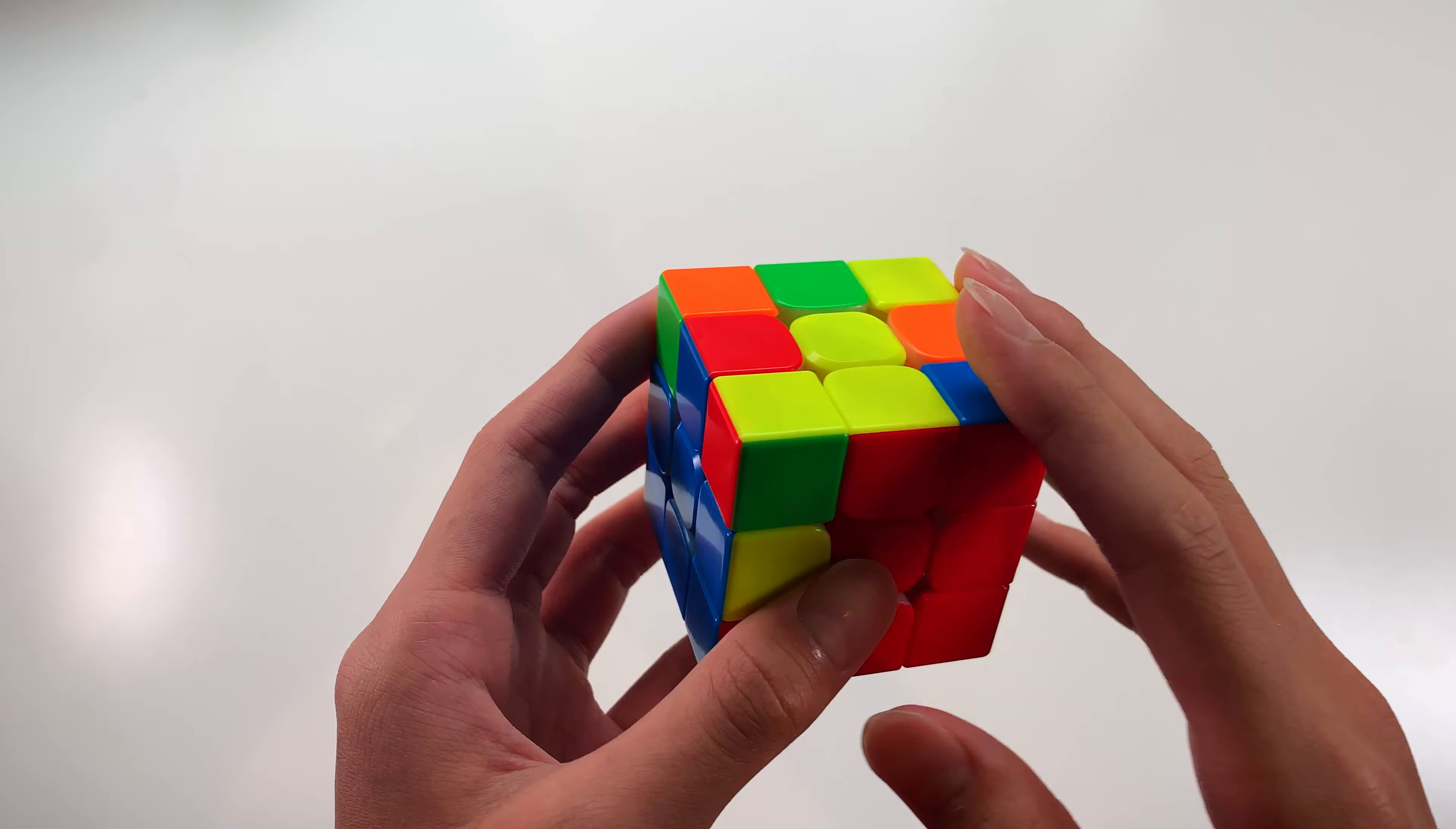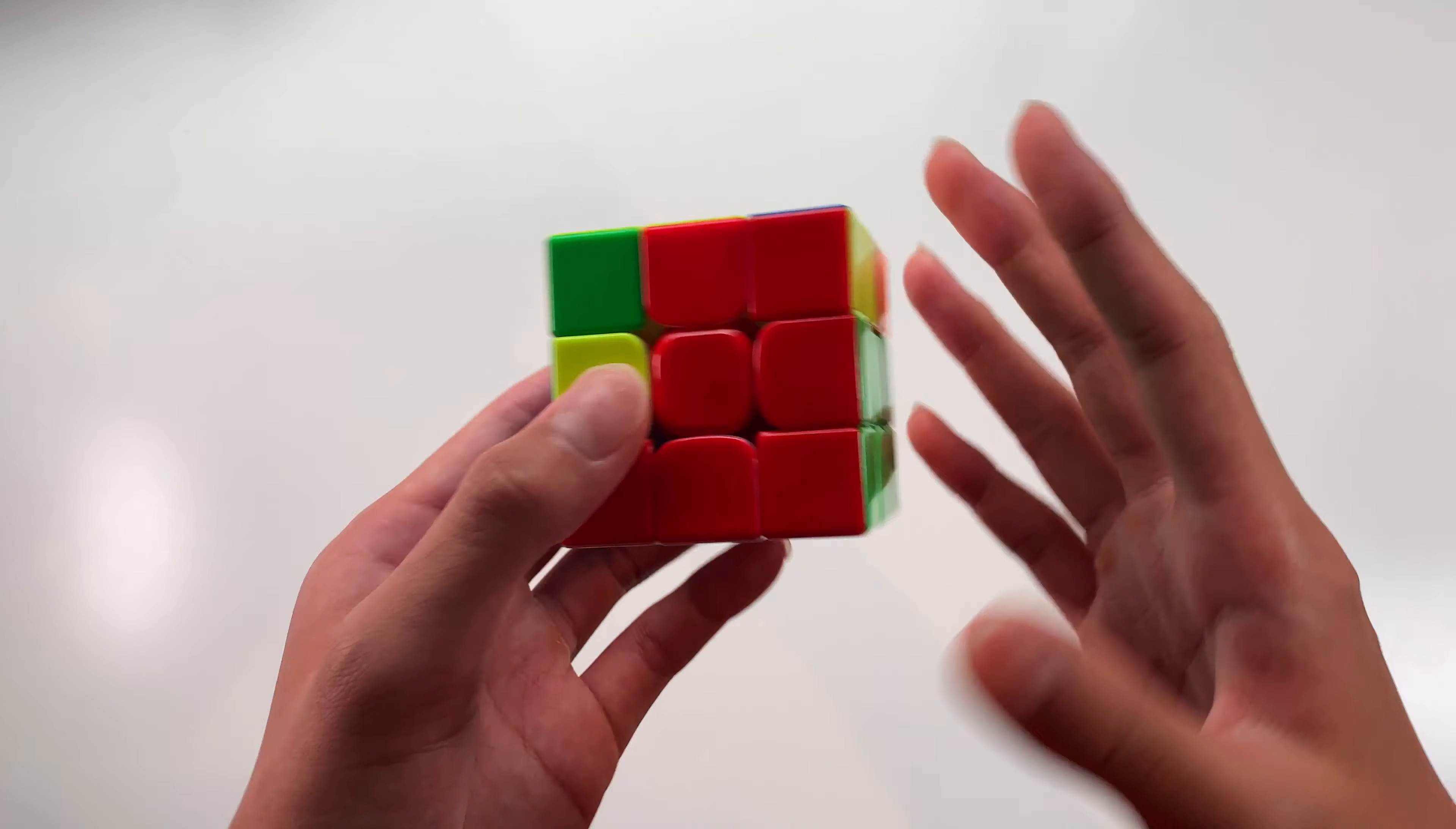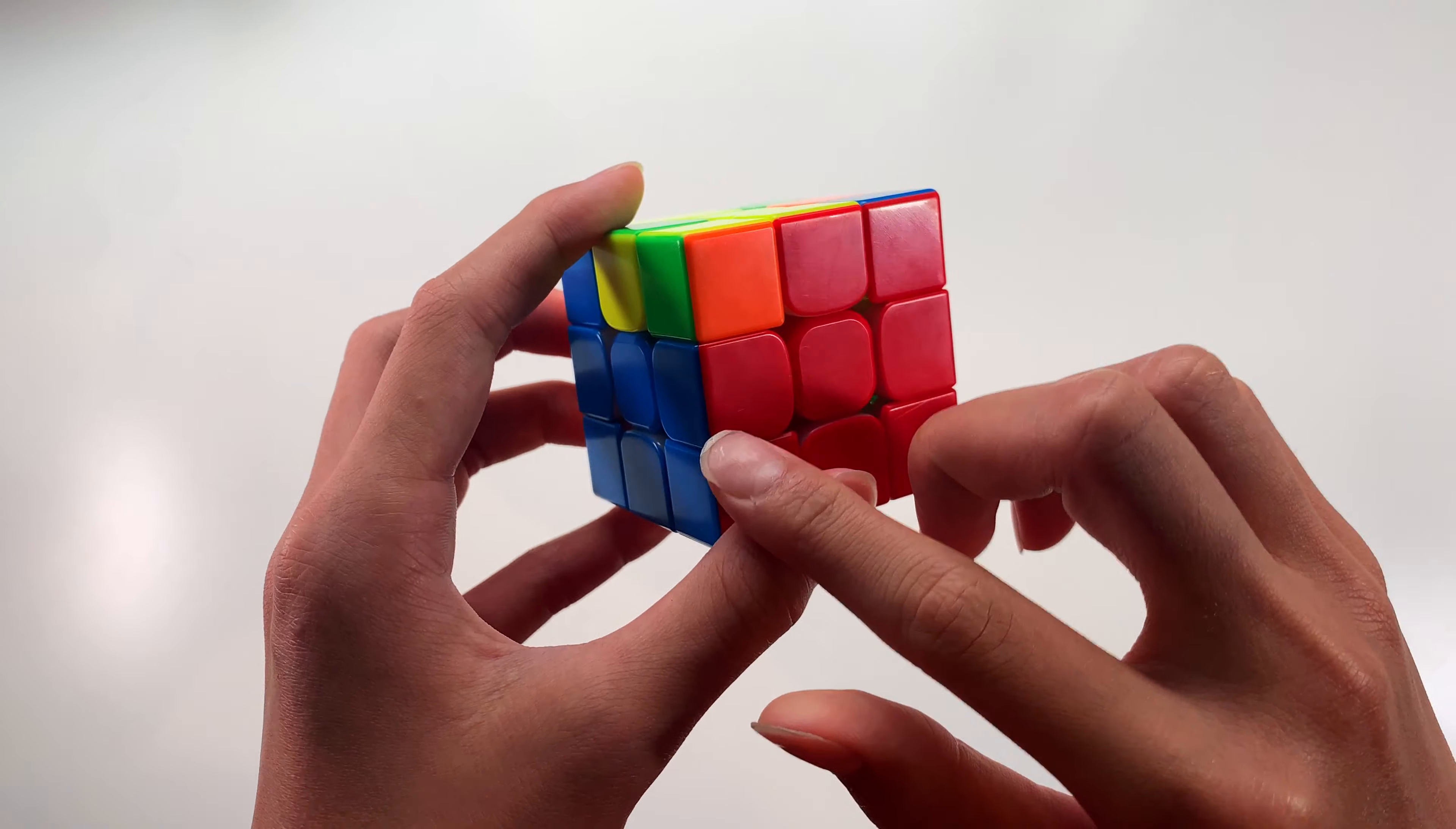Now, we have the same case as the first one. I said that we are holding it from this angle such that the empty slot is in the front. And if the colors line up on the side here, you can actually just do a sexy sledge to insert that. But instead of just doing a normal sexy sledge, you will do a wide sexy sledge. So sexy move with wide R moves, and sledgehammer with wide R moves as well, and that will solve this.